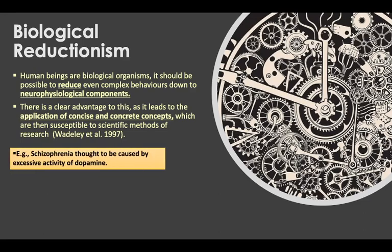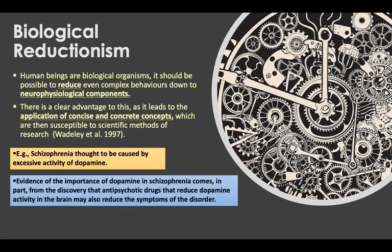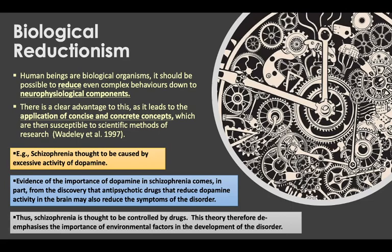The biological approach has been successfully applied to a number of topic areas within psychology. Psychoactive drugs and the brain have contributed much to our understanding of neural processes, and it may be possible to explain serious mental disorders such as OCD, depression, and schizophrenia at the biological level. For example, schizophrenia is thought to be caused by excessive activity of dopamine. Evidence comes from the discovery that antipsychotic drugs that reduce dopamine activity in the brain may also reduce the symptoms of the disorder — so schizophrenia is thought to be controlled by drugs. This theory therefore de-emphasizes the importance of environmental factors, focusing instead on the biological aspect.